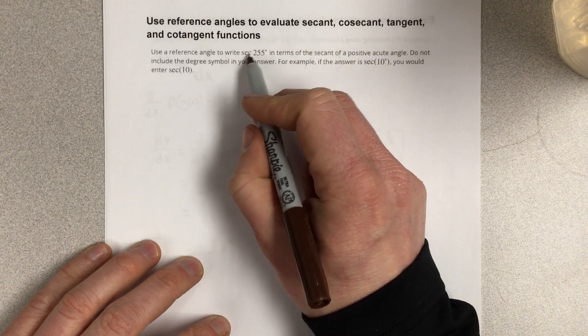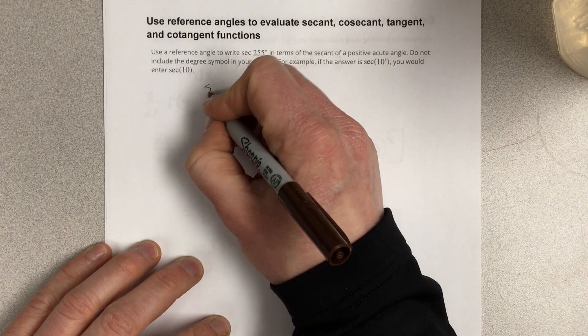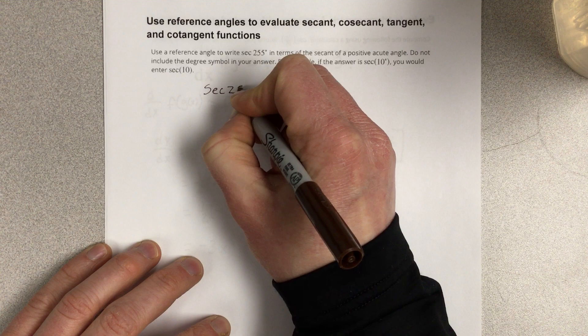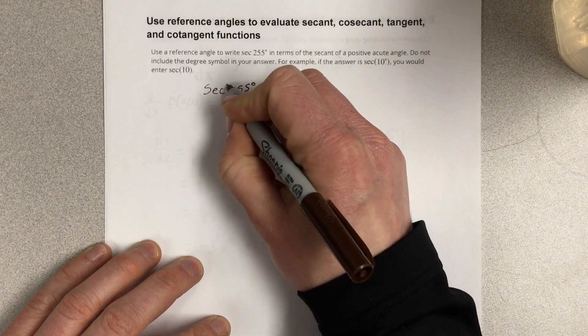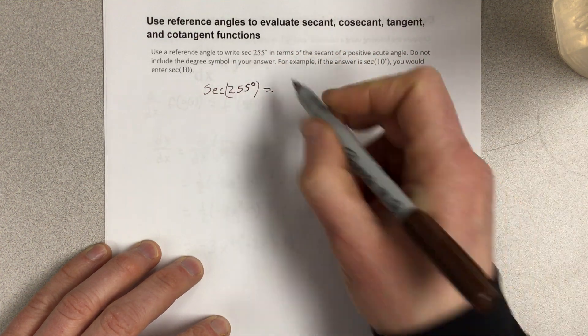What we want to do is write secant 255 degrees equal to some equivalent expression in quadrant 1.